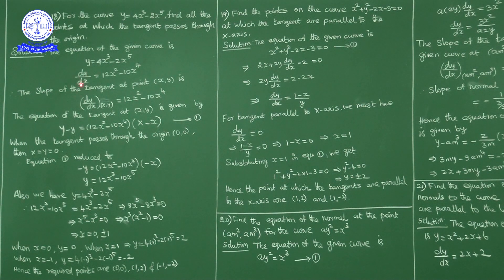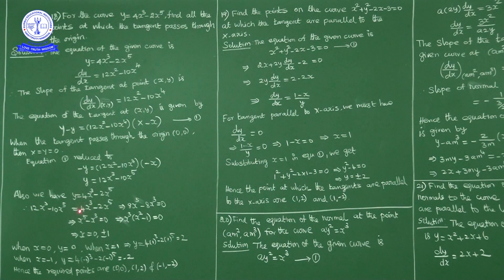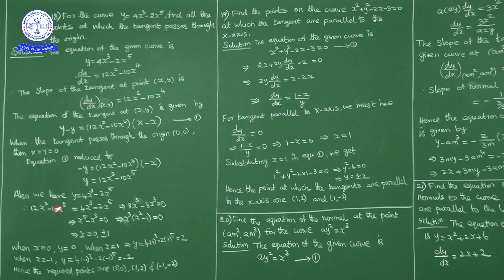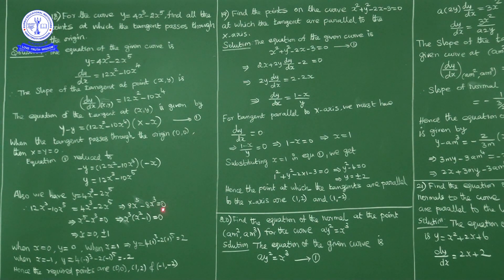But from the given curve, y = 4x³ - 2x⁵. Substituting: 12x³ - 10x⁵ = 4x³ - 2x⁵. Rearranging: 10x⁵ - 2x⁵ = 8x⁵ and 4x³ - 12x³ = -8x³. So 8x⁵ - 8x³ = 0, taking 8 common: 8(x⁵ - x³) = 0.